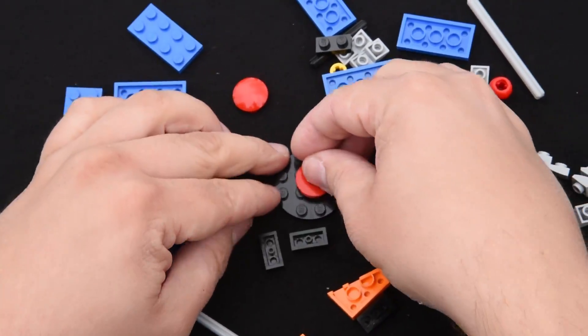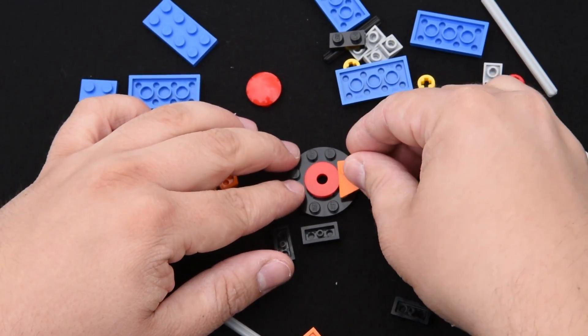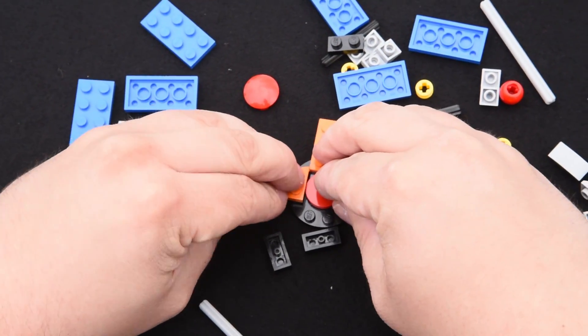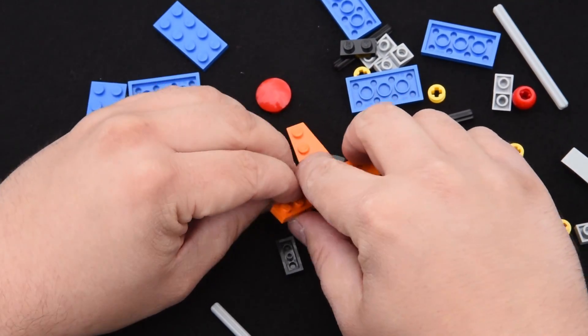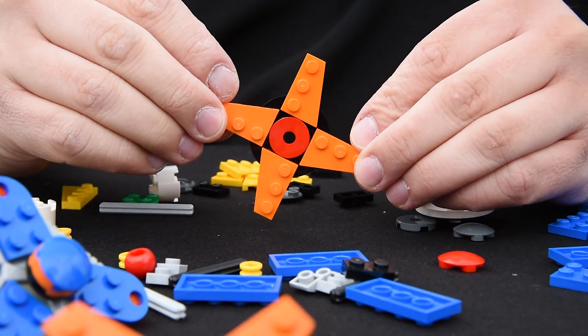And then on the outside I'm going to take these orange wings and put them here, it's four of those on the outside so you have this kind of star or ninja shuriken type shape.